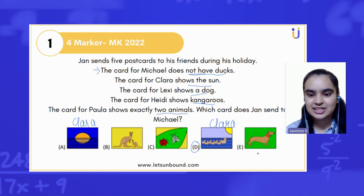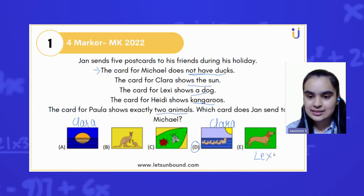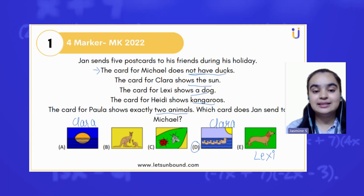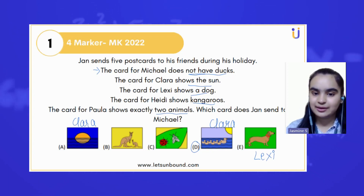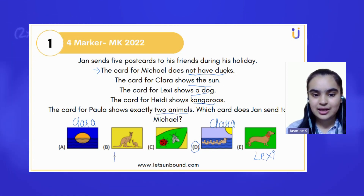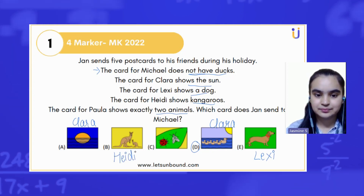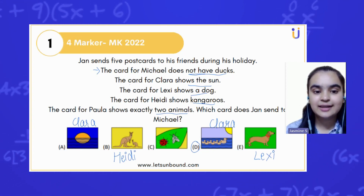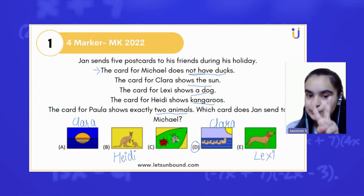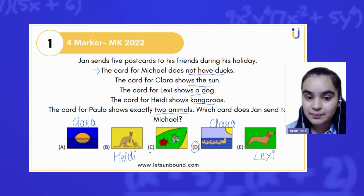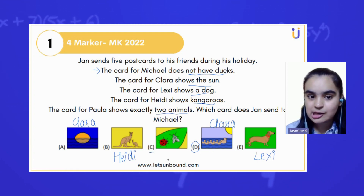The card for Lexi shows a dog, so Lexi has that postcard. The card for Heidi shows kangaroos, and kangaroos appear only in option B, so that belongs to Heidi. The card for Paula shows exactly two animals, and we can see two animals in option C, so that card belongs to Paula.